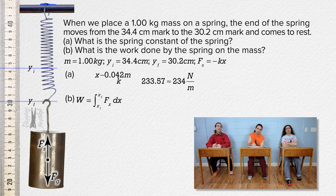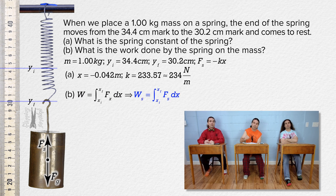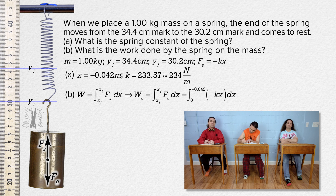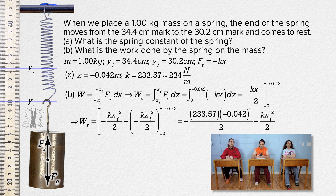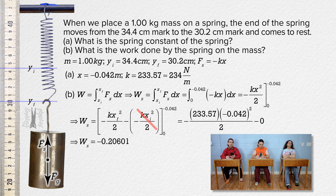Very nice. Billy, please finish part B. The work done by the spring on the mass equals the integral from initial position to final position of the force of the spring with respect to x. That equals the integral from 0 to negative 0.042 of negative spring constant times displacement from equilibrium position with respect to position. The integral of that is negative spring constant times displacement squared all over 2, evaluated from 0 to negative 0.042. That works out to be negative 233.57 times negative 0.042 squared over 2, minus zero, which gives us negative 0.206 joules with 3 sig figs.